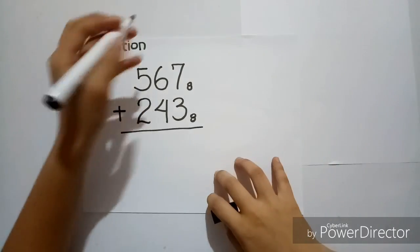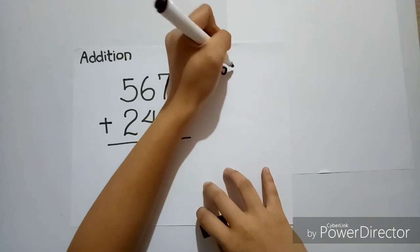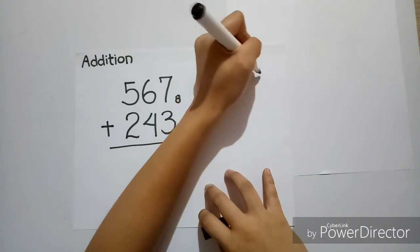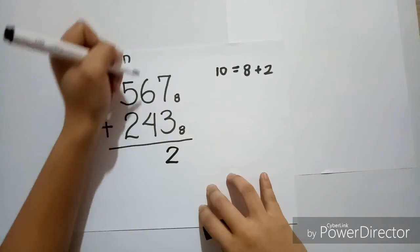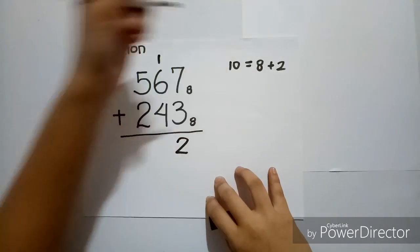Now, 7 plus 3 is equal to 10, which is equal to 8 plus 2. So, let's take 2, then carry 1, since 1 is equal to 8.